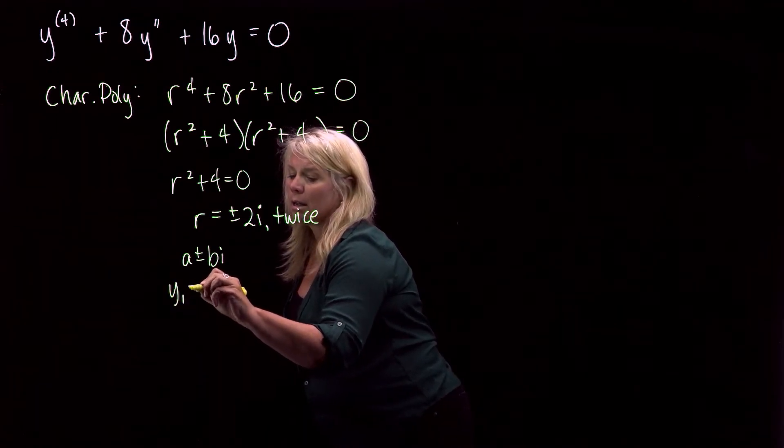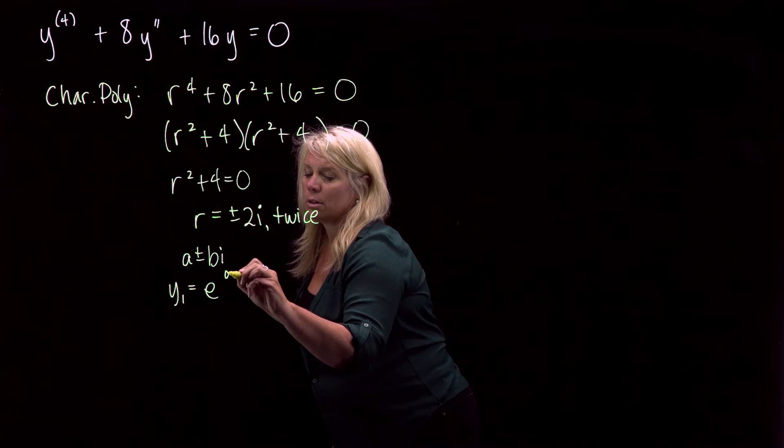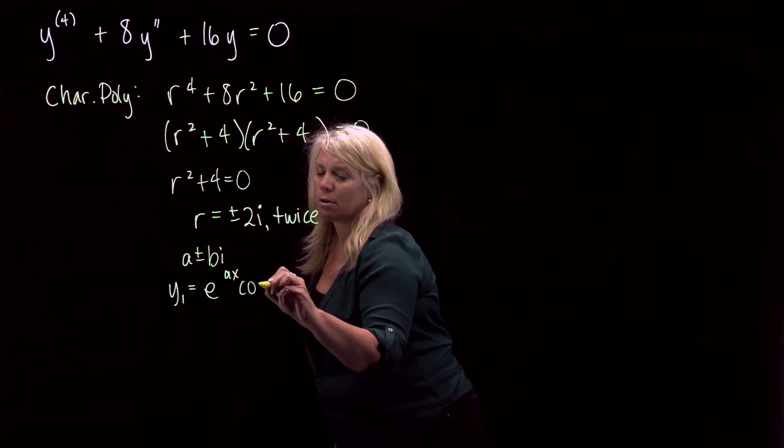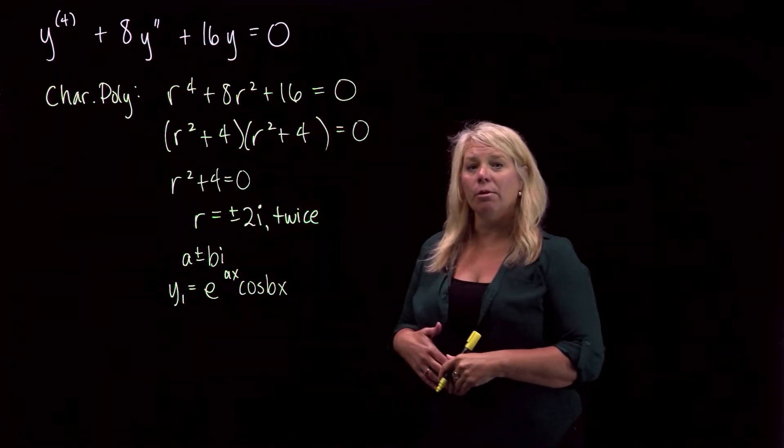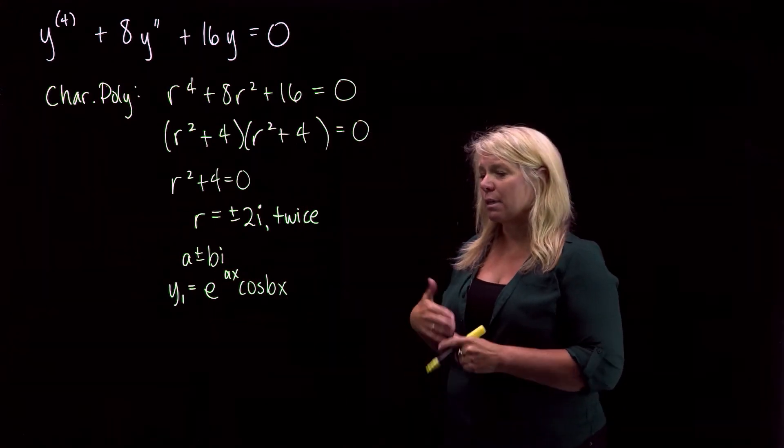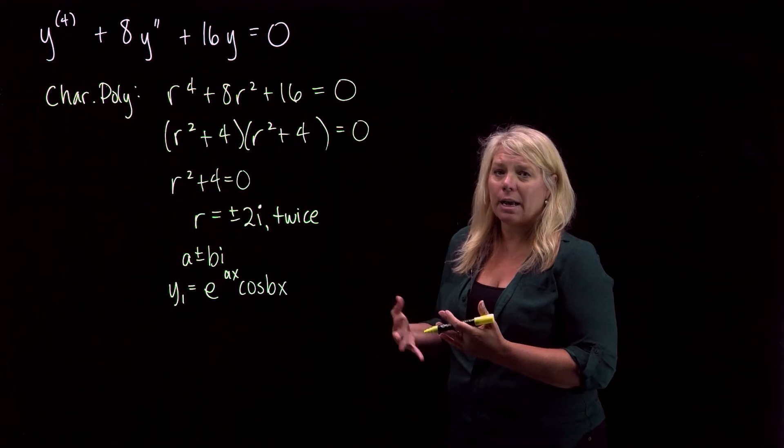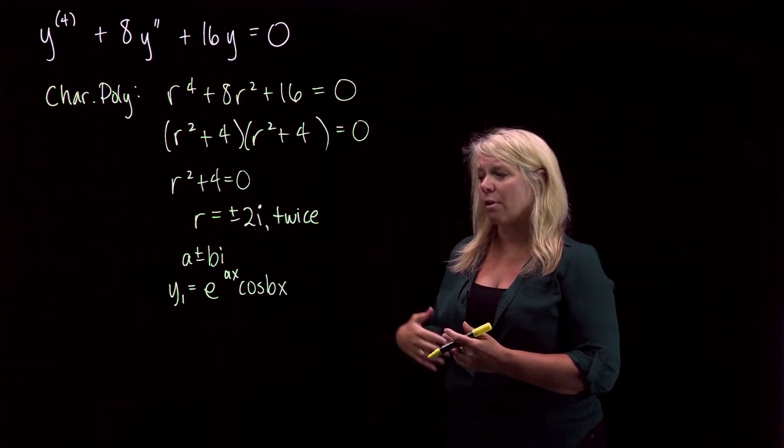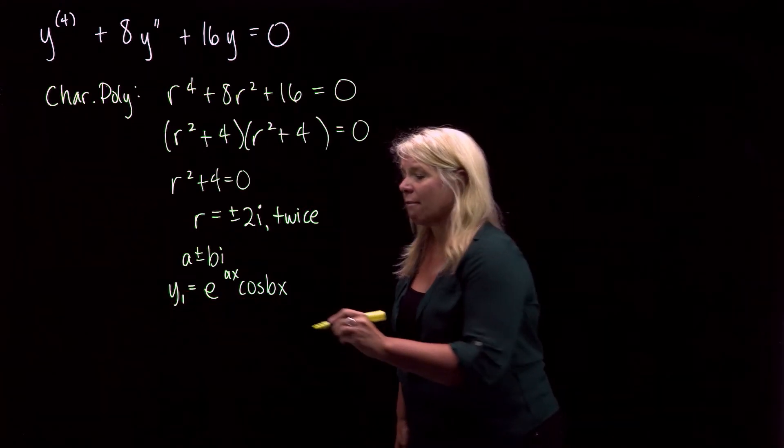y1 equals e to the ax cosine bx. We went through the polar form of complex numbers and talked a little bit about that and understand how we can write complex numbers in that form. So we'll get one in that form.